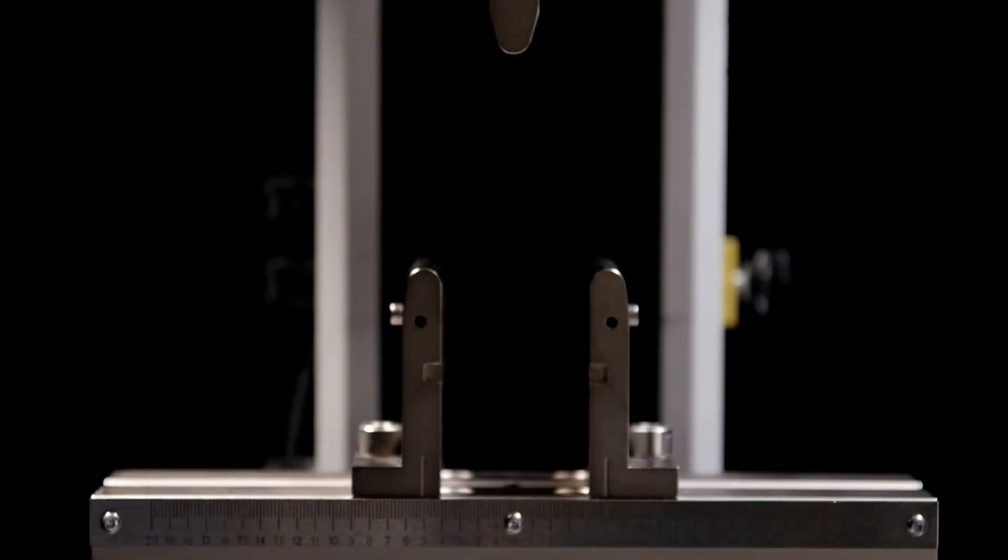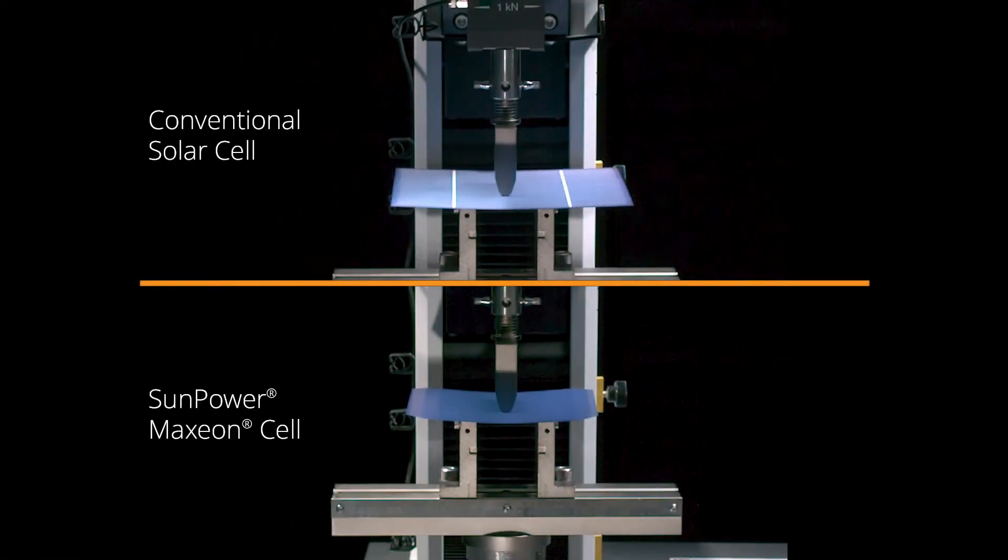A simple three-point bend test reveals how a cell will stand up to harsh conditions like those on your roof. Let's watch.